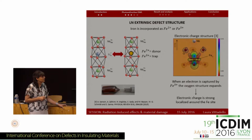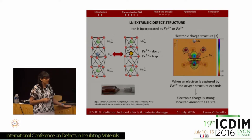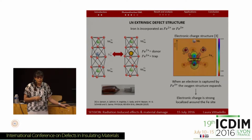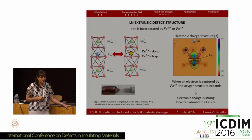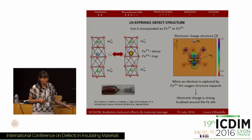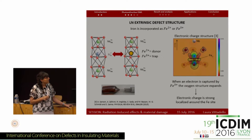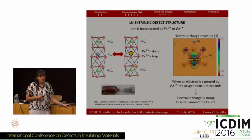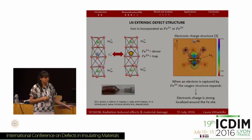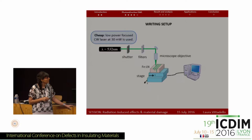The iron is incorporated in the structure only as Fe²⁺ or Fe³⁺ in a lithium site, and lots of work is currently in progress — as Simone Sanna showed yesterday — to better understand this defect structure. In particular, I show here the electronic charge structure calculated by Simone Sanna using ab initio calculations.